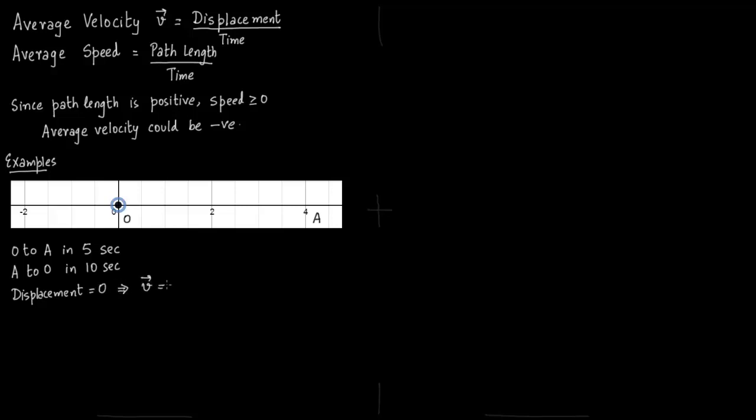So you have OO vector as the displacement which is just of length 0. So v vector is 0. On the other hand, the path length is 8.